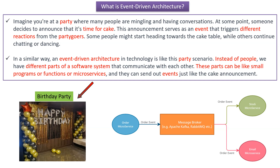Imagine you are at a party where many people are mingling and having conversations. At some point, someone from the party decides to announce that it is time for cake. This announcement serves as an event. That event triggers different reactions from the people at the party — some people might start heading towards the cake table, and some people continue chatting or dancing.